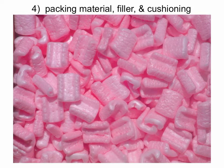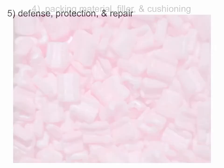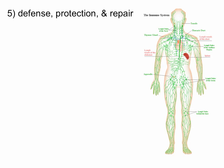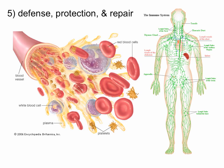You don't actually have pink styrofoam packing peanuts in you, but the goal is the same. Defense, protection, and repair is another function of connective tissue. That brings us back to the lymphatic system, immune system, as well as the cardiovascular system, because that's how different kinds of white blood cells, platelets, and all the other materials you need to heal are brought to the place you need them.